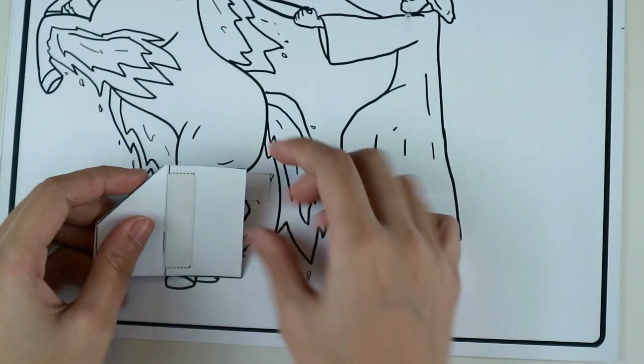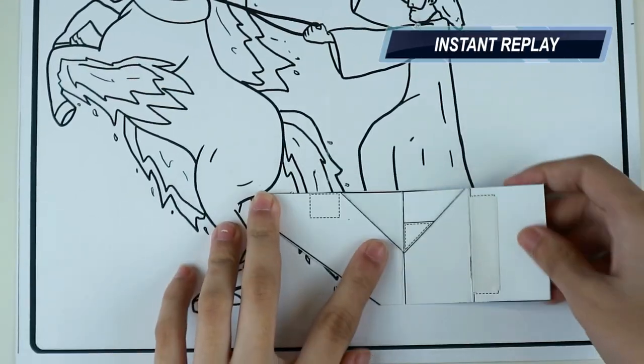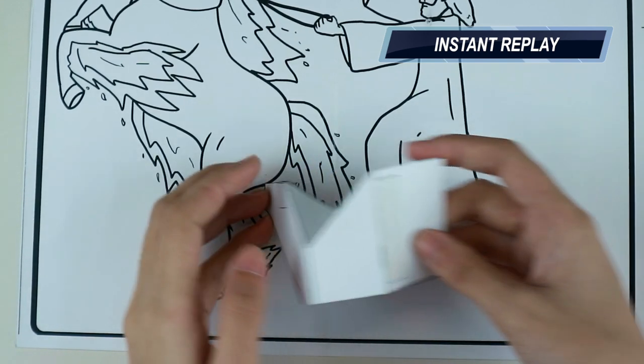Next, fold the triangle inward and onto the other side. Here's an instant replay for those who didn't catch it.